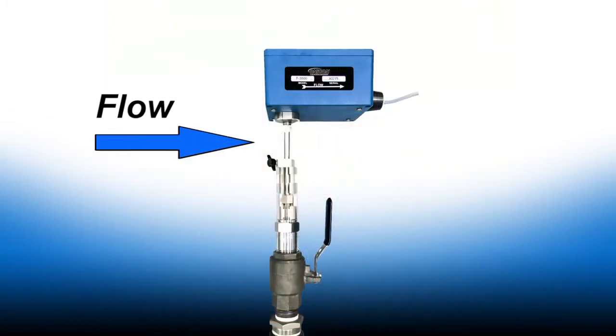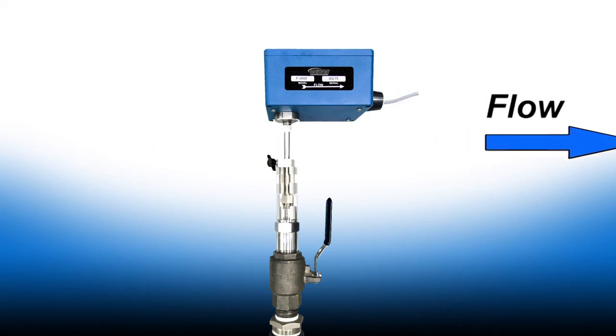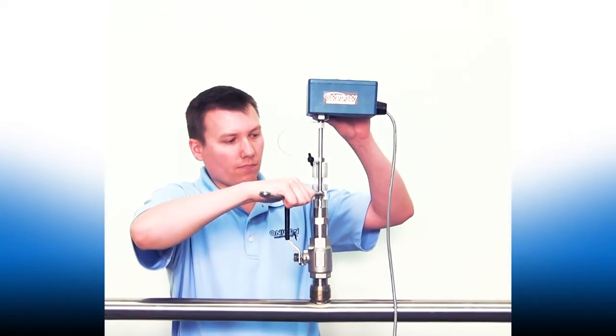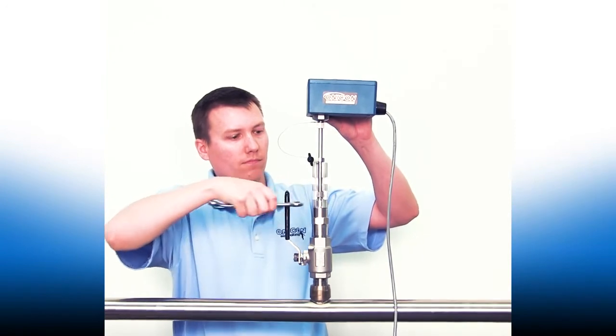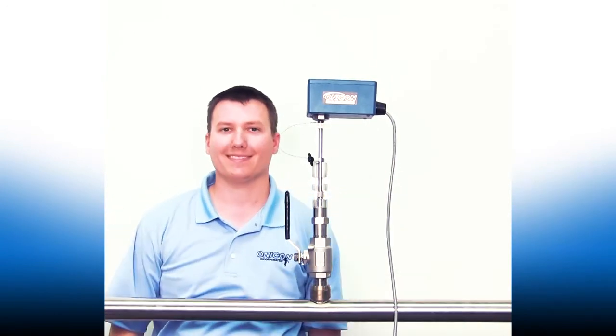Make sure the flow direction on the meter is pointed in the direction of flow in the pipe. Tighten the clamping nut with an adjustable or a five-eighths inch wrench to set the depth and orientation.